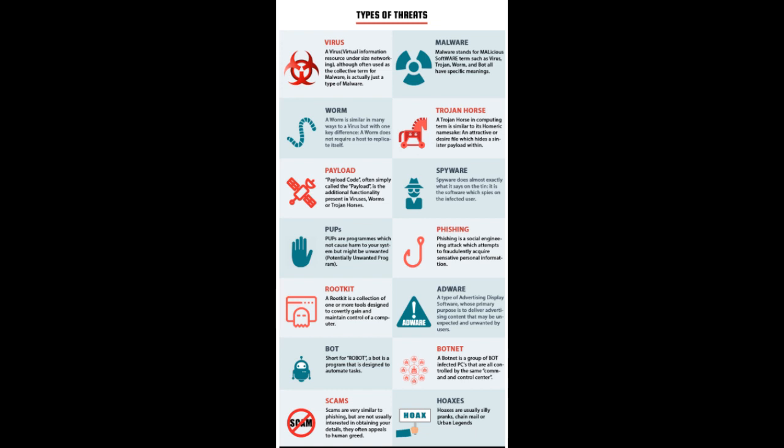Worm — a worm is similar in many ways to a virus, but with one key difference: a worm does not require a host to replicate itself. Trojan Horse — a trojan horse in computing terms is similar to its Homeric namesake: an attractive or desirable file which hides a sinister payload within. Payload code, often simply called the payload, is the additional functionality present in viruses, worms, or trojan horses.